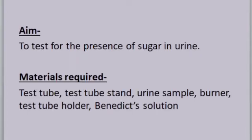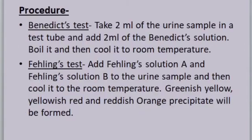Aim: to test for the presence of sugar in urine. Materials required: test tube, test tube stand, urine sample, burner, test tube holder, Benedict solution. Procedure — Benedict's test: take 2 ml of the urine sample in a test tube and add 2 ml of the Benedict solution.